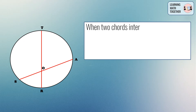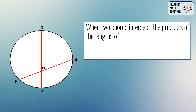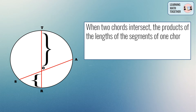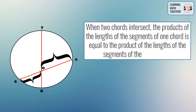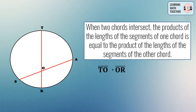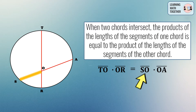When two chords intersect, the product of the lengths of the segments of one chord is equal to the product of the lengths of the segments of the other chord. So if you multiply the two segments formed by one chord — line segment TO and line segment OR — it must be equal to the product of the segments formed by the other chord, which are line segment SO and line segment OA.